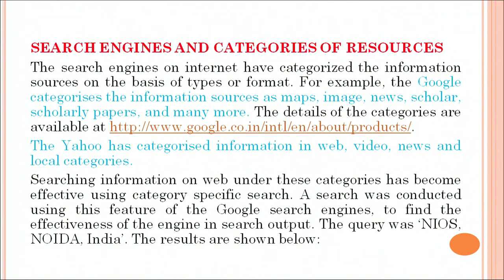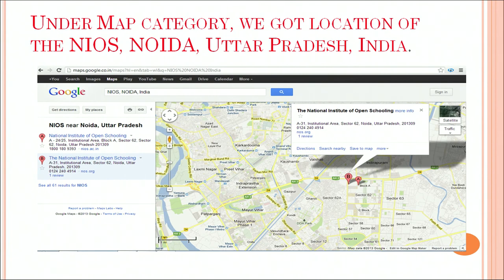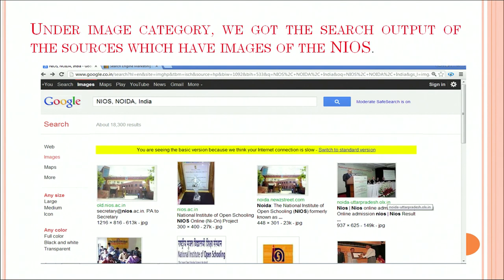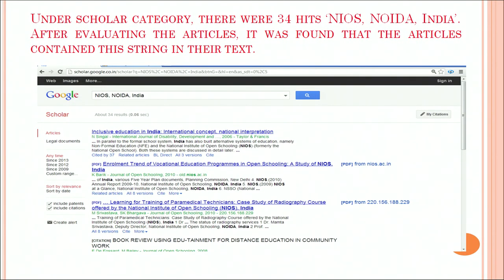Yahoo has categorized information in web, video, news, and other local categories. Searching information on the web under these categories has become effective using category-specific search. A search was conducted using the Google search engine to find the effectiveness of the engine in search output. The query was 'NIS NOIDA India.' This is where we are searching NIS NOIDA on a Google map, showing us where NIS is placed. You can also get scholarly information and other information related to NIS in images. This is the screenshot for that.